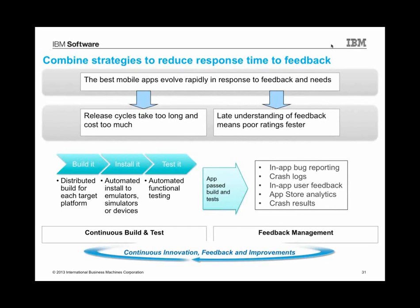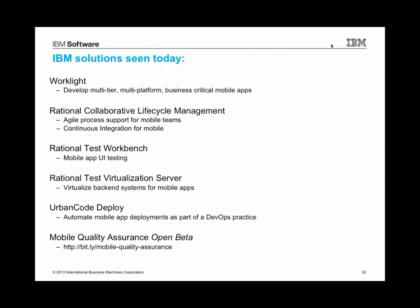We advocate combining strategies to reduce your time to feedback. Part of it is doing this continuous build and test process, and if you marry that up with the feedback management from Mobile Quality Assurance, you can really dramatically improve your continuous integration and feedback loop. To conclude: we talked about Worklight as a multi-platform solution for developing apps; the Rational Collaborative Lifecycle Management Solution for agile development teams, available at hub.jazz.net; Rational Test Workbench for UI test automation; Rational Test Virtualization Server for virtualizing back-end systems; Urban Code Deploy for automatically deploying mobile builds out onto test systems; and the brand-new IBM Mobile Quality Assurance offering in open beta, which helps you manage the feedback you're getting from testers and users.